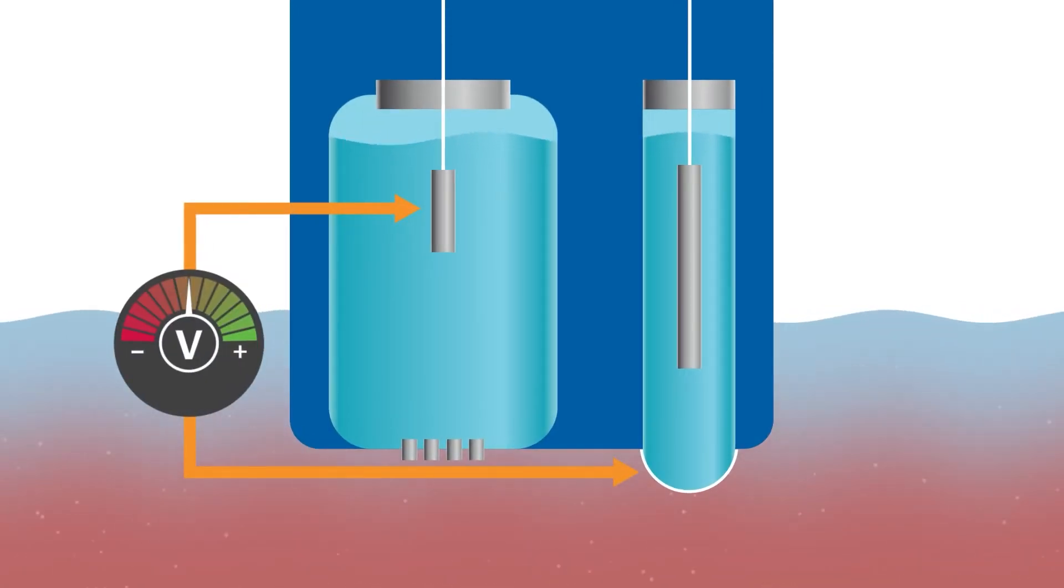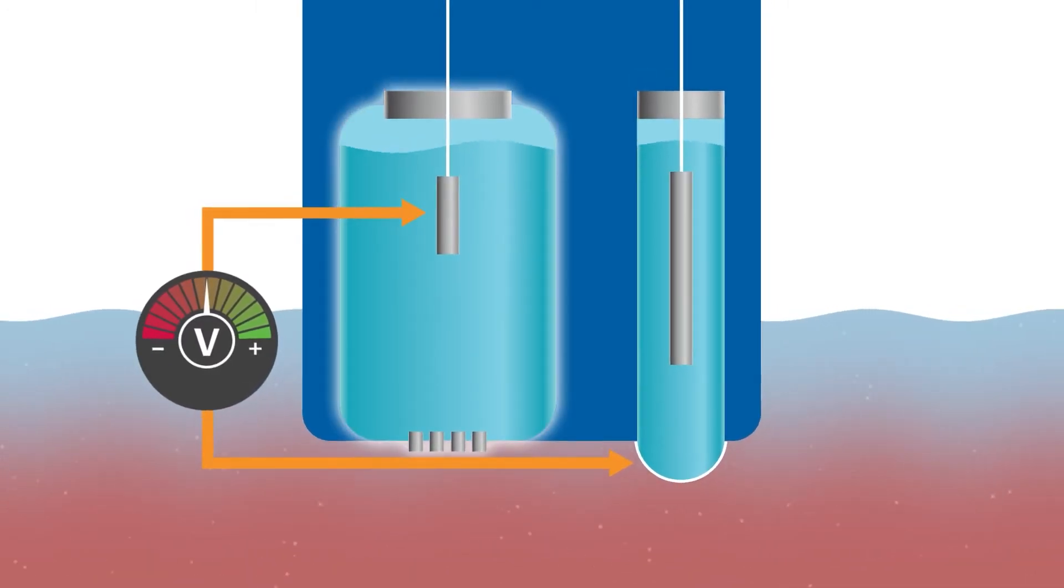pH sensors work by measuring the voltage difference between a pH-sensitive measuring electrode and a stable reference electrode.